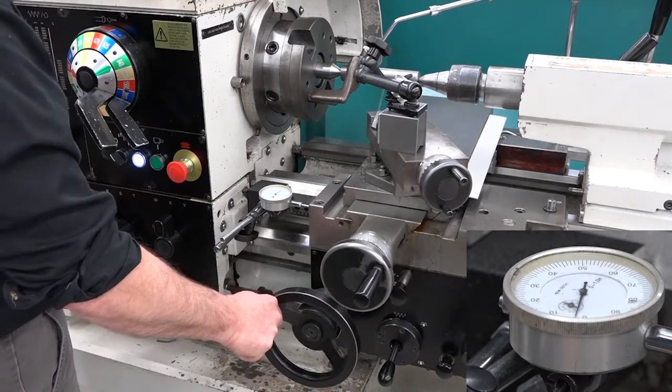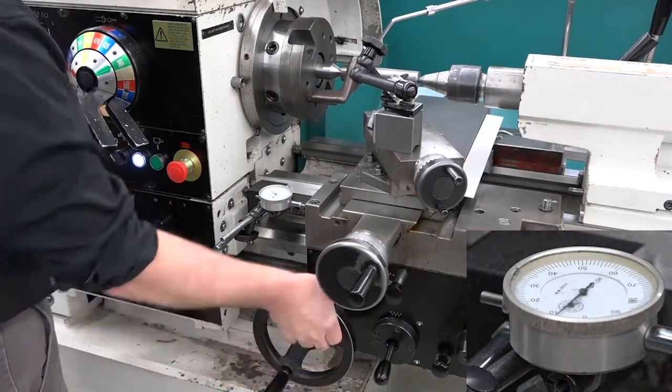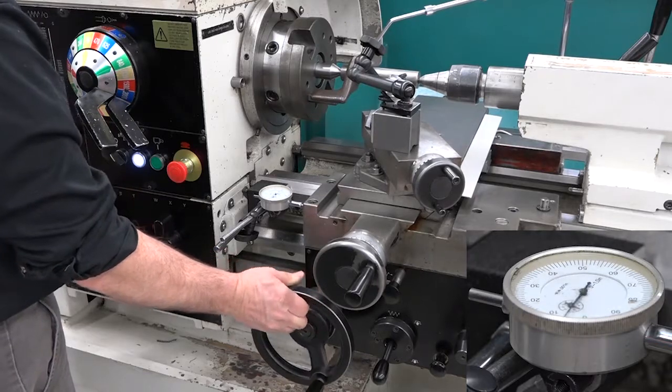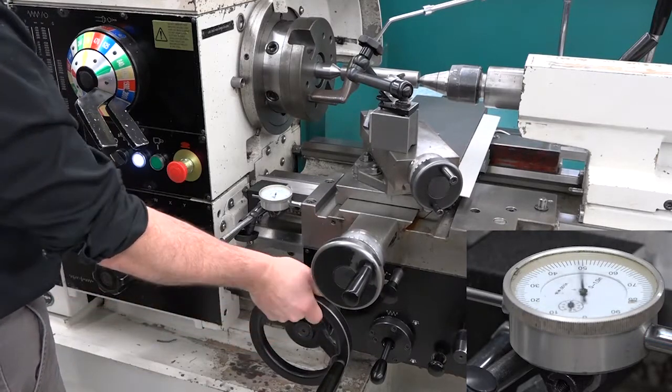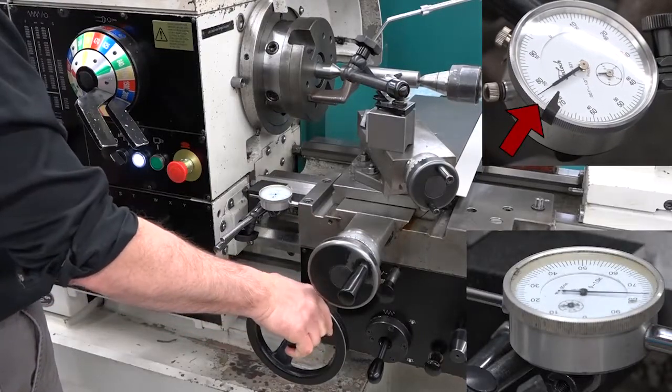Move the carriage one inch or ten turns of the indicator. Again, if the lathe is equipped with a digital readout, this indicator can be eliminated. The indicator on the center of the work should have traveled 0.025 inches.